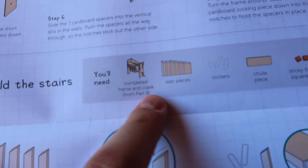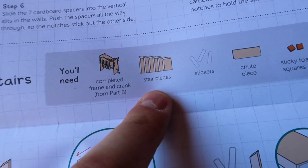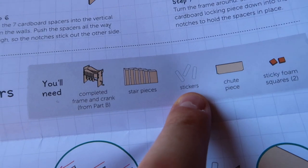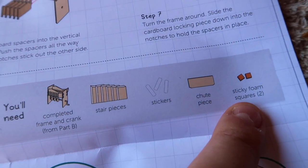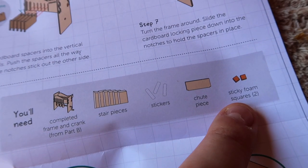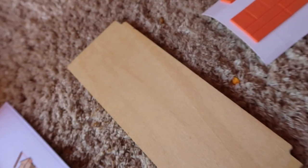Time to build the stairs. We're almost done. Build the stairs. So what you're gonna need is the stair pieces, stickers, shoot piece, and some more sticky foam squares. There's the shoot piece. Perfect.